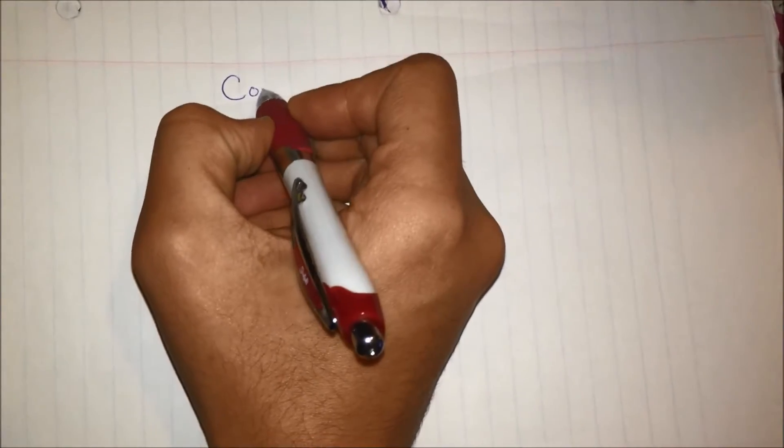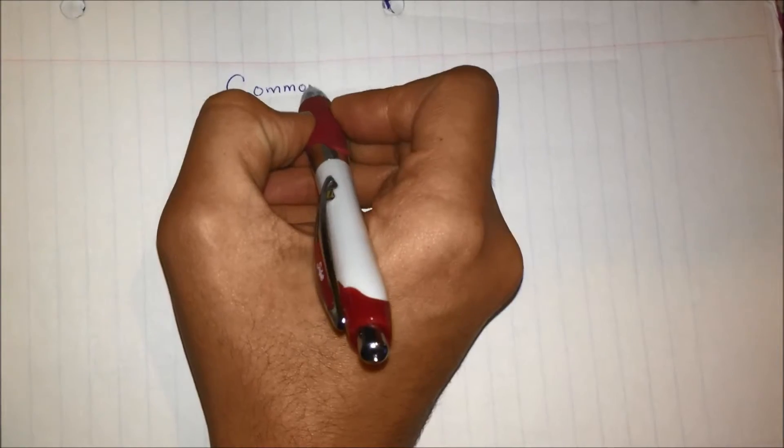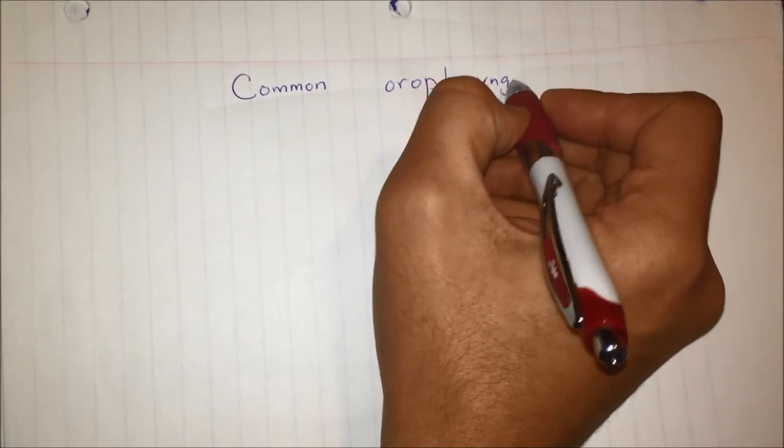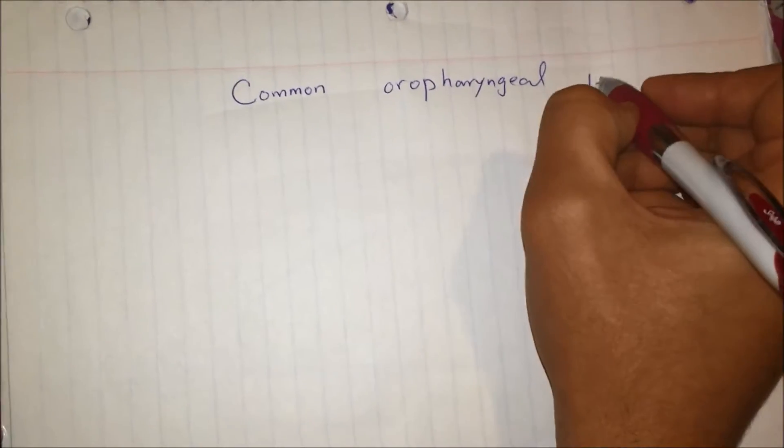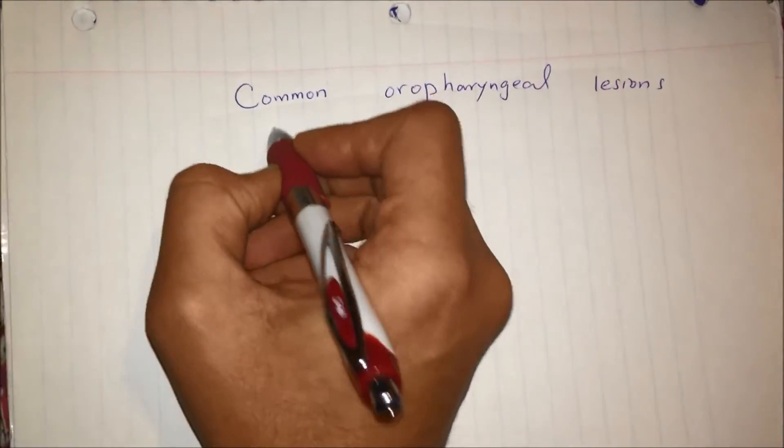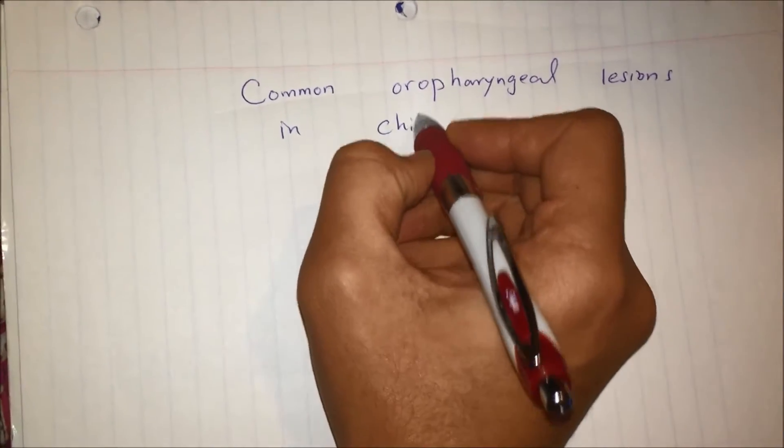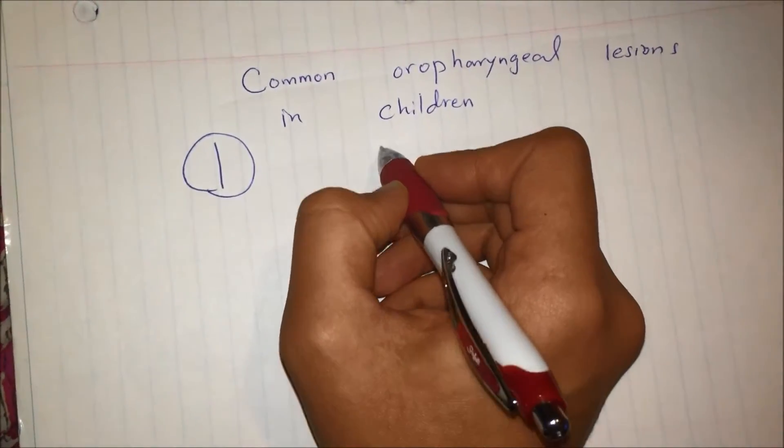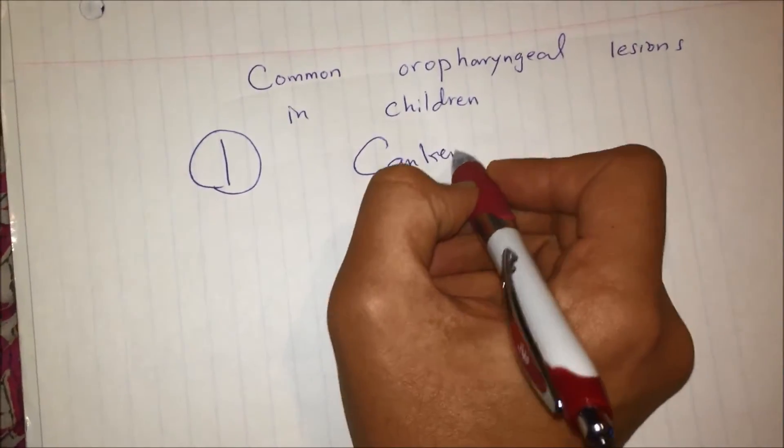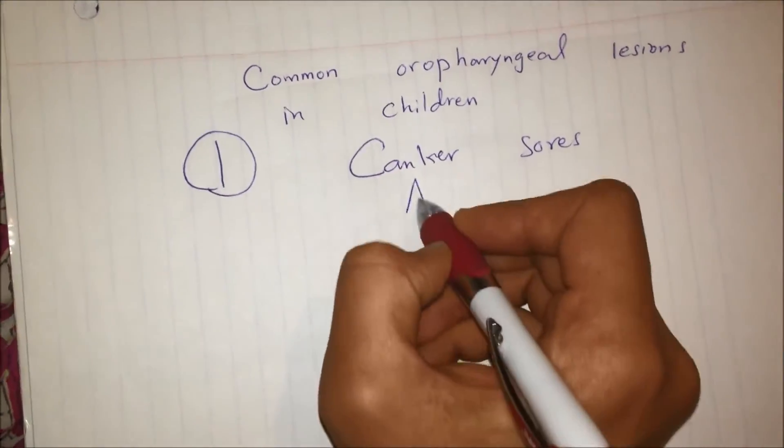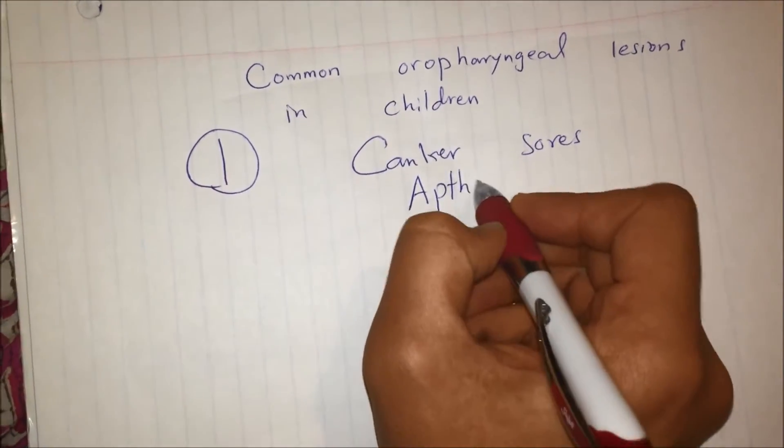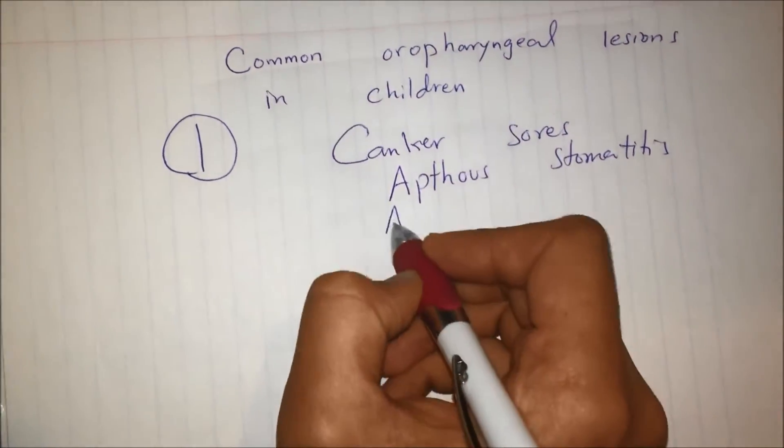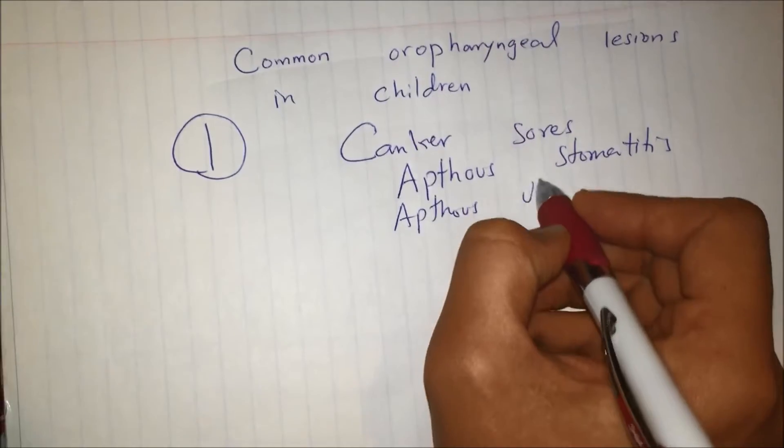Common oropharyngeal lesions in children. First one is lips - Canker sores, also called Aphthous Stomatitis or Aphthous Ulcer.